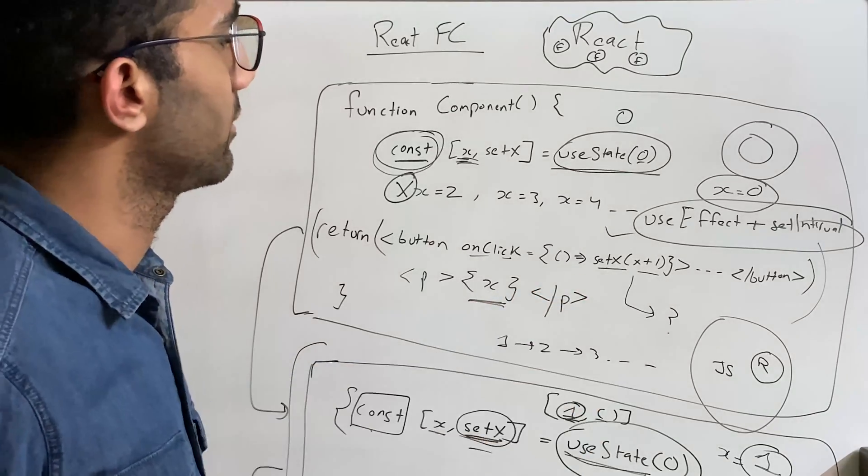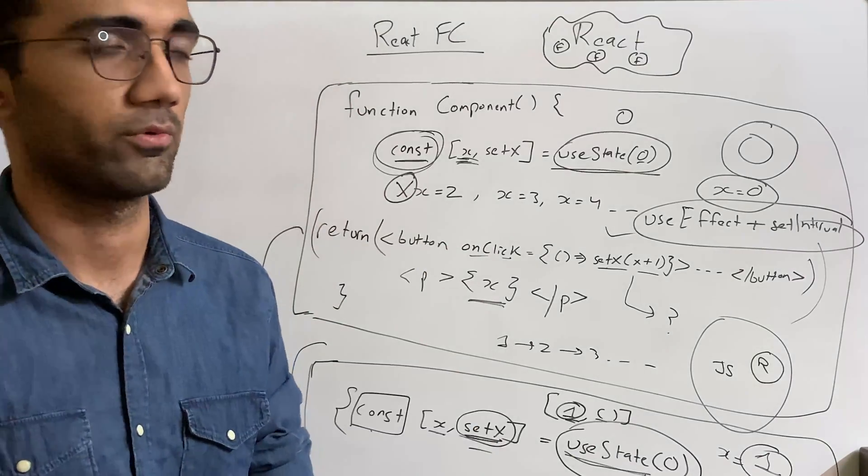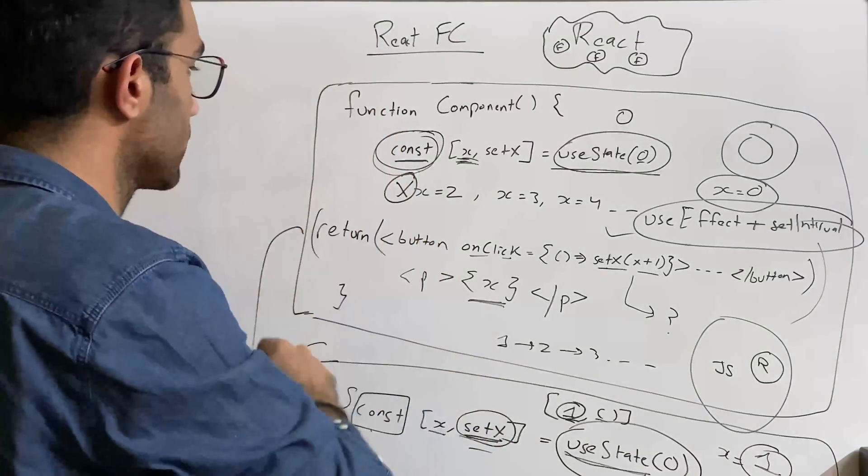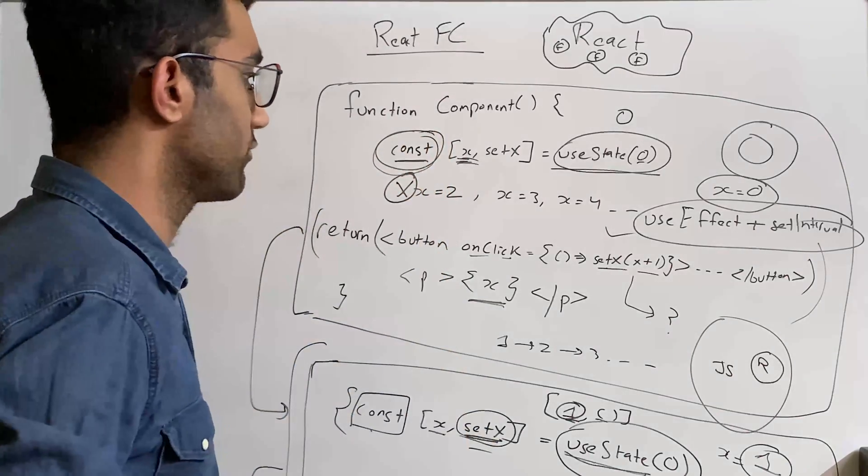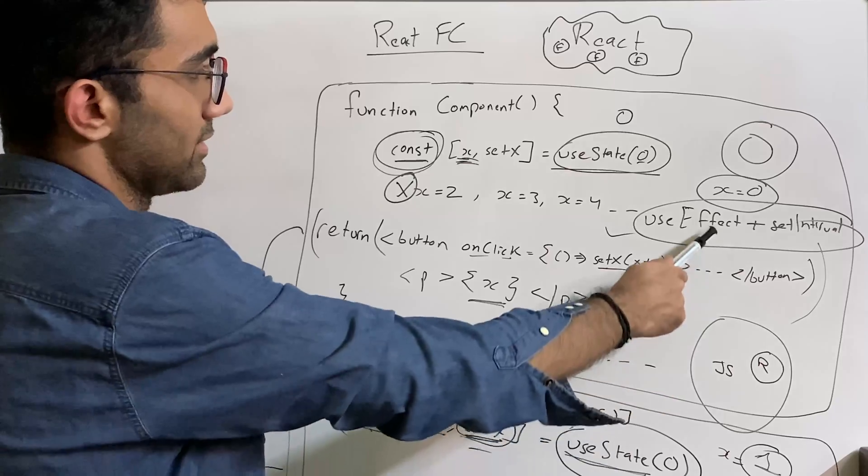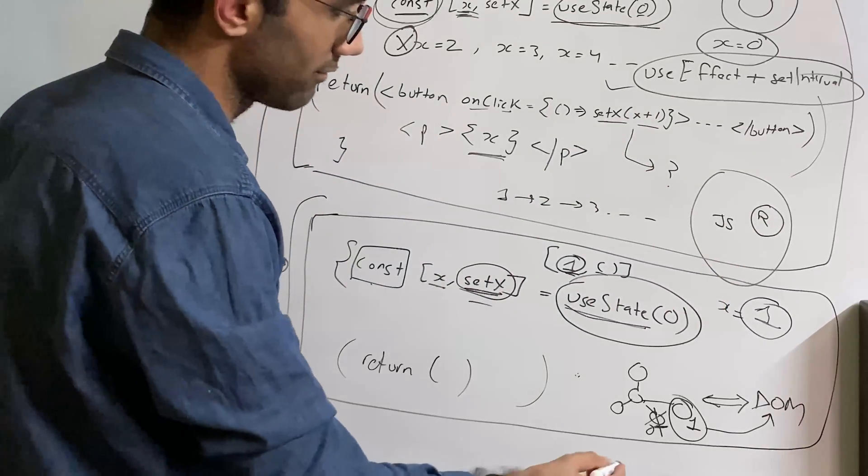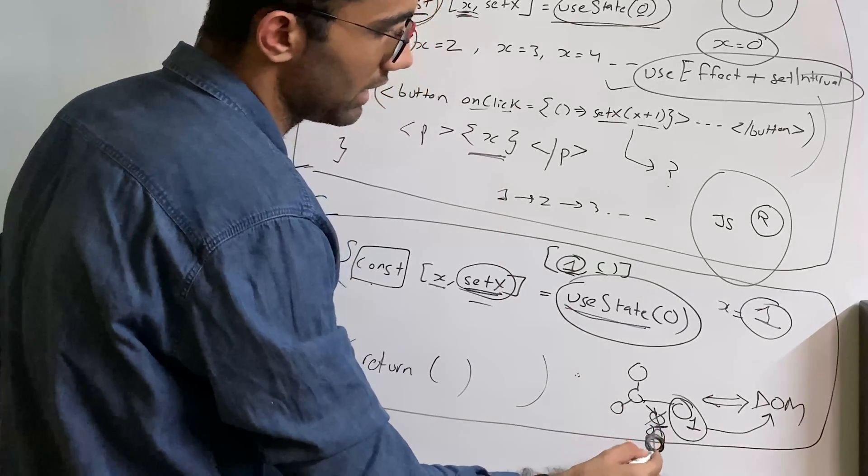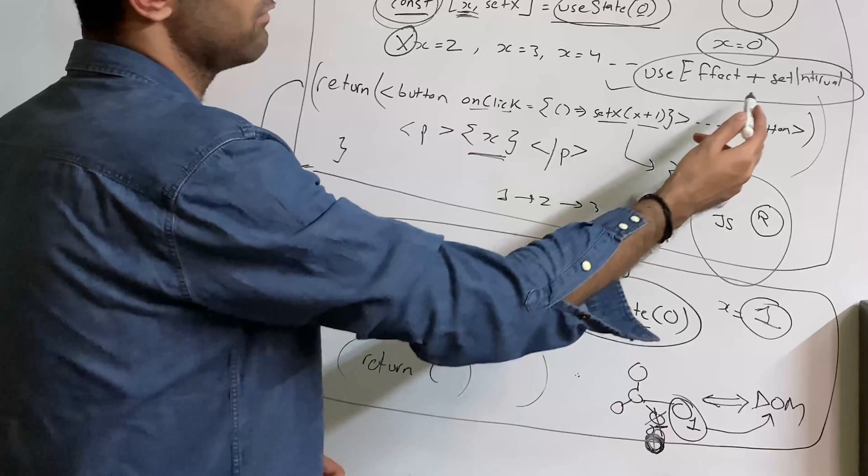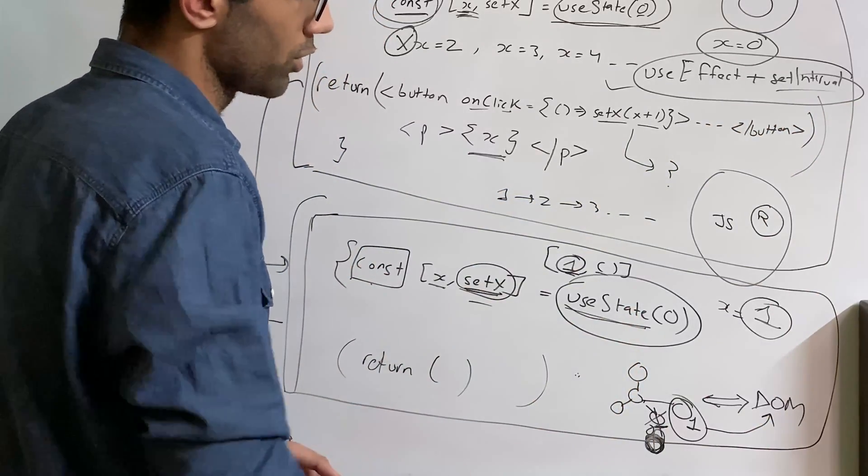On every single state update, they create a new function, they never reuse the previous one, right? In an ideal world, this previous function should be destroyed and, you know, garbage collected and all that stuff. But a lot of times, like I said, this is one of the clearest examples where you can, you know, just have this zombie function sitting right here, eating some variables, some memory resources, even running some side effects, possibly. So you don't want to do that.